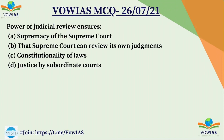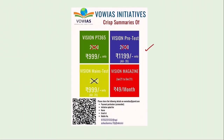Now the question of the day: The power of judicial review ensures — A. Supremacy of the Supreme Court, B. The Supreme Court can review its own judgments, C. Constitutionality of laws, D. Justice by the subordinate court. Do give your answer in the comment box and tomorrow we will discuss this question. We have also launched the Vision Prelims Test Series Summary, Vision Mains Test Series Summary, Vision Monthly Magazine and Vision PT365 Summary. Use these summaries wisely for efficient preparation.